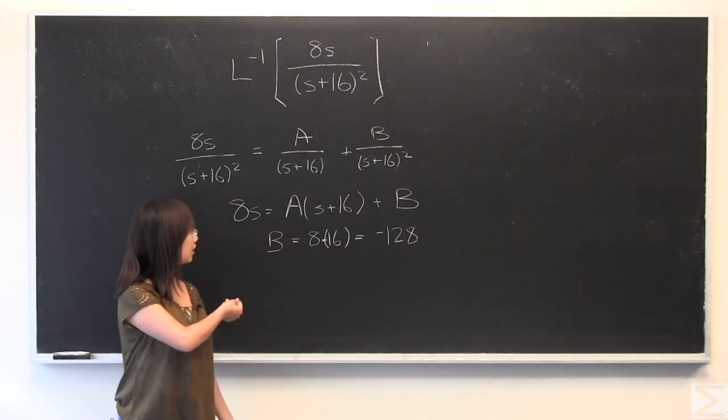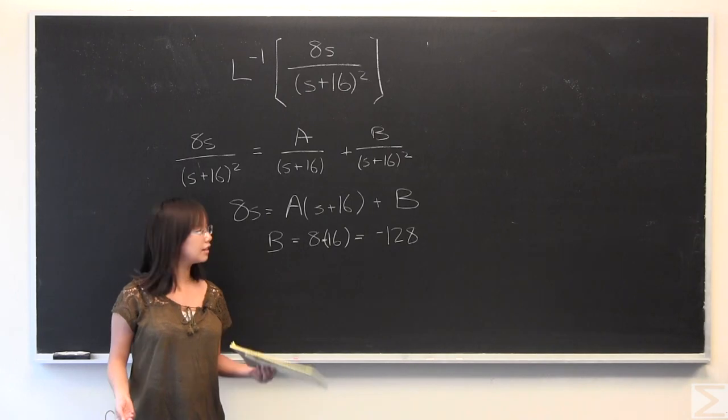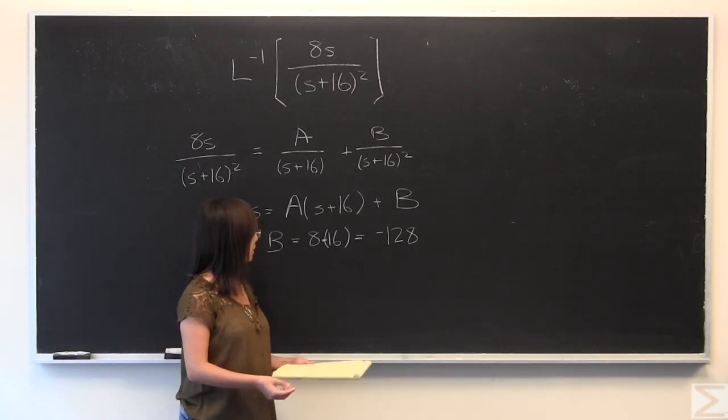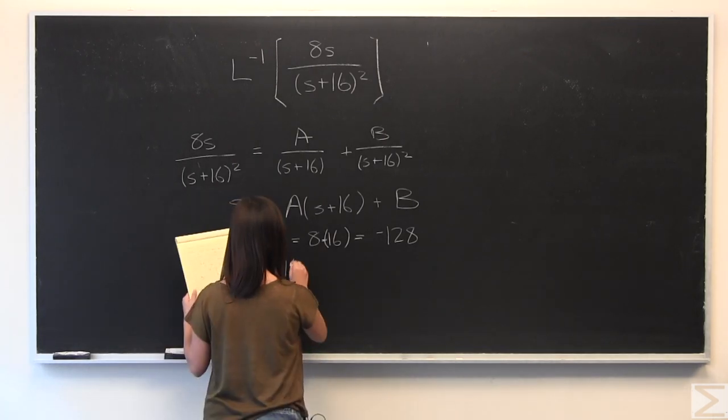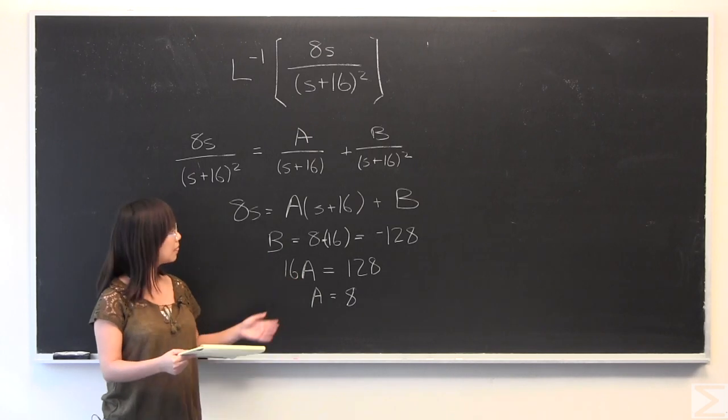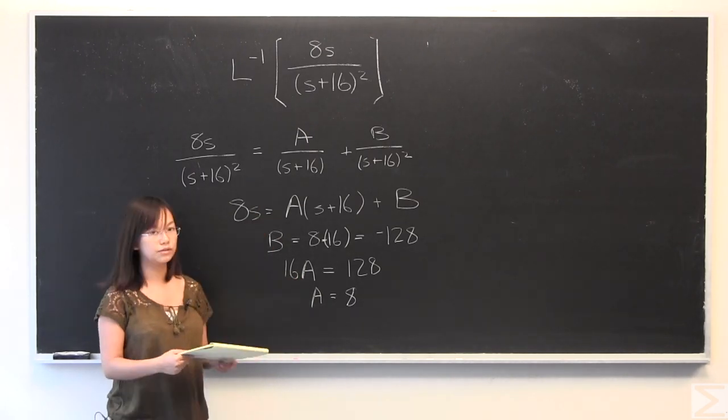And then from here, we can set s equal to 0. And when we do that, then this term disappears, and the equation is, again, very easy. And we can solve for a. So these are our two constants for the partial fraction.